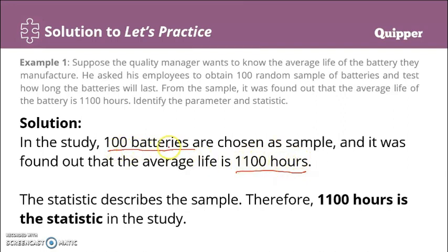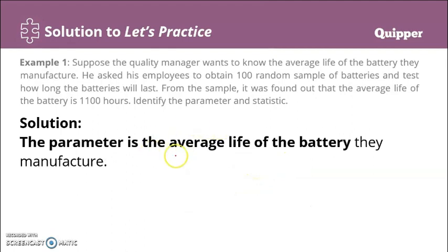So the statistic describes the sample — therefore 1100 hours is the statistic in the study, because it describes the 100 sampled batteries. Whereas the parameter is the average life of all the batteries they manufacture, which refers to the entire population of batteries manufactured.